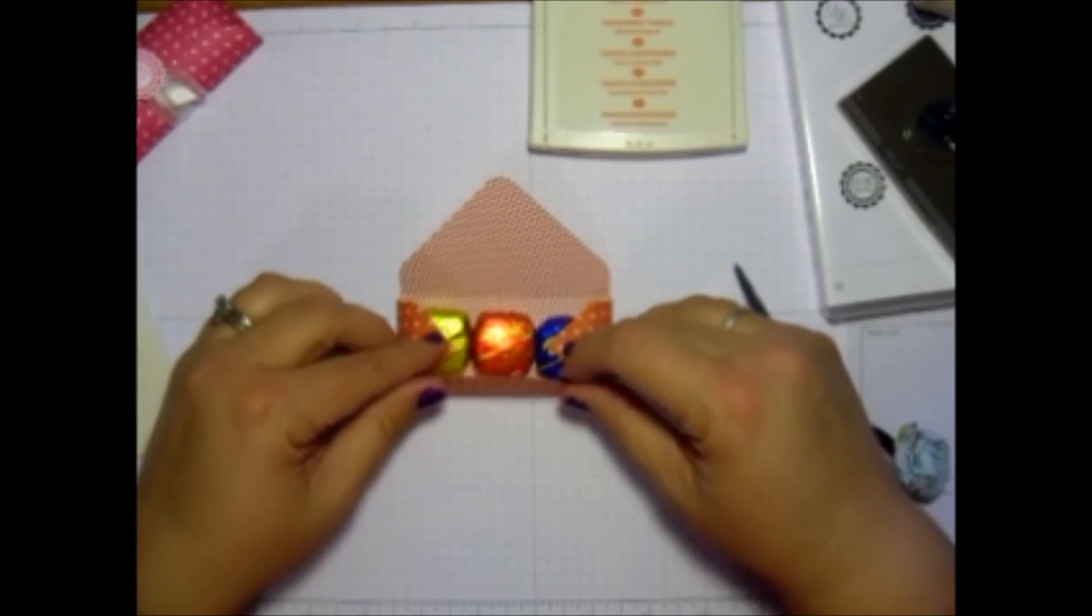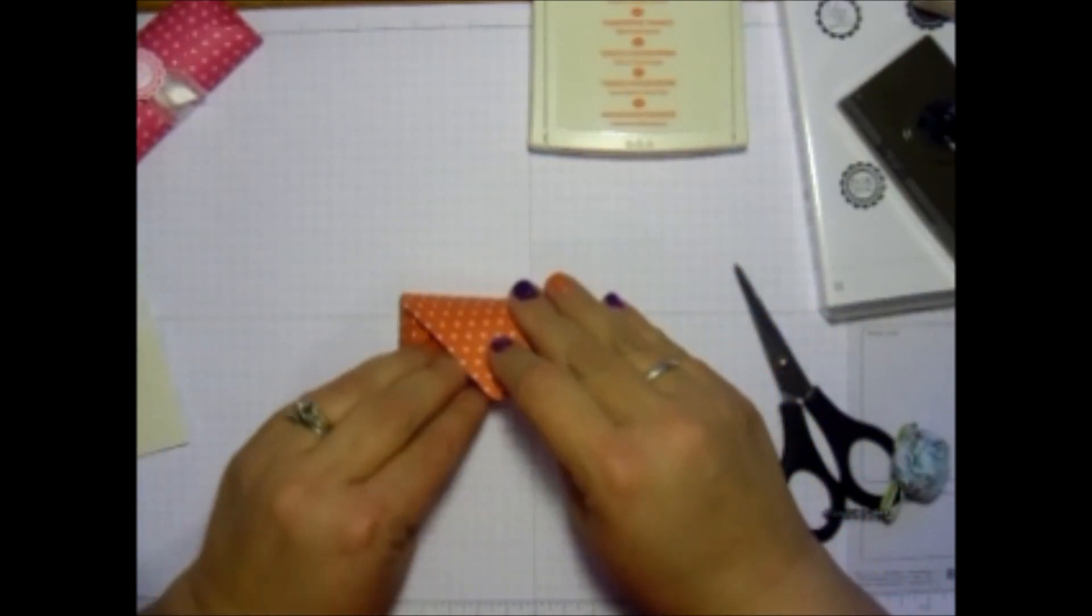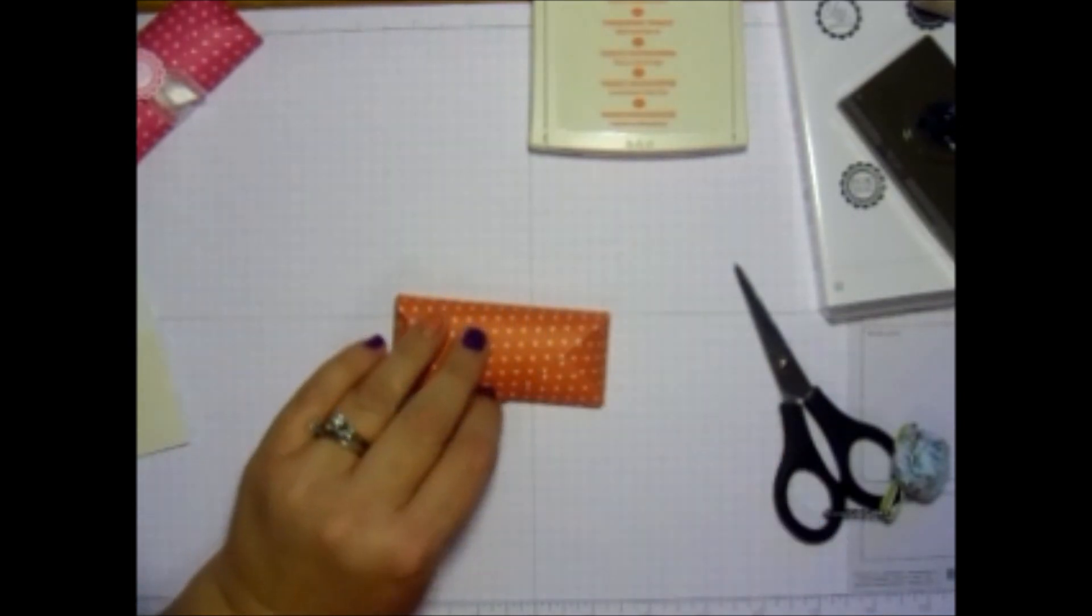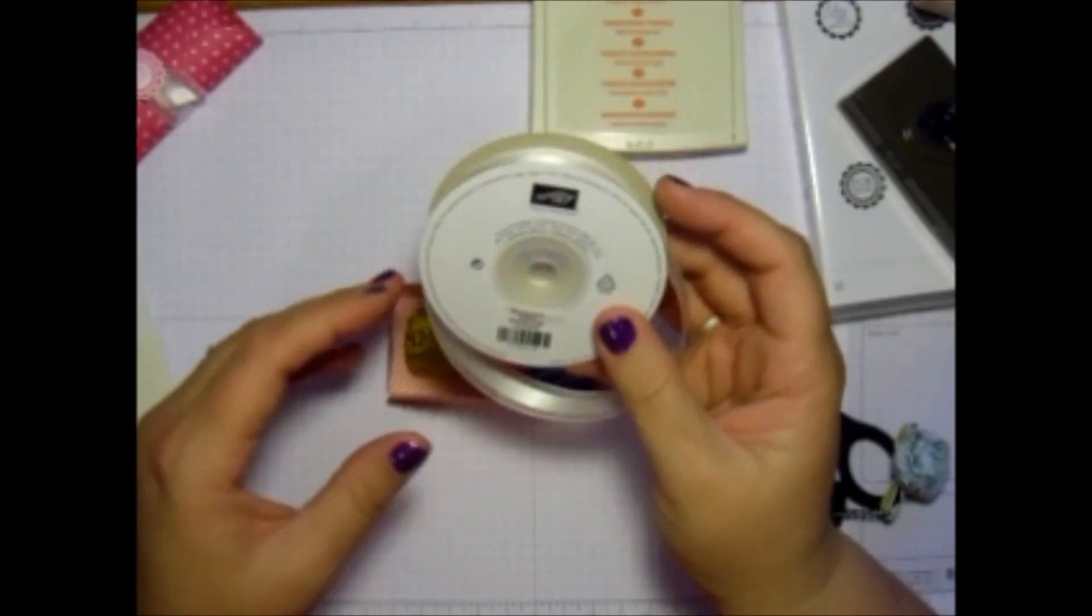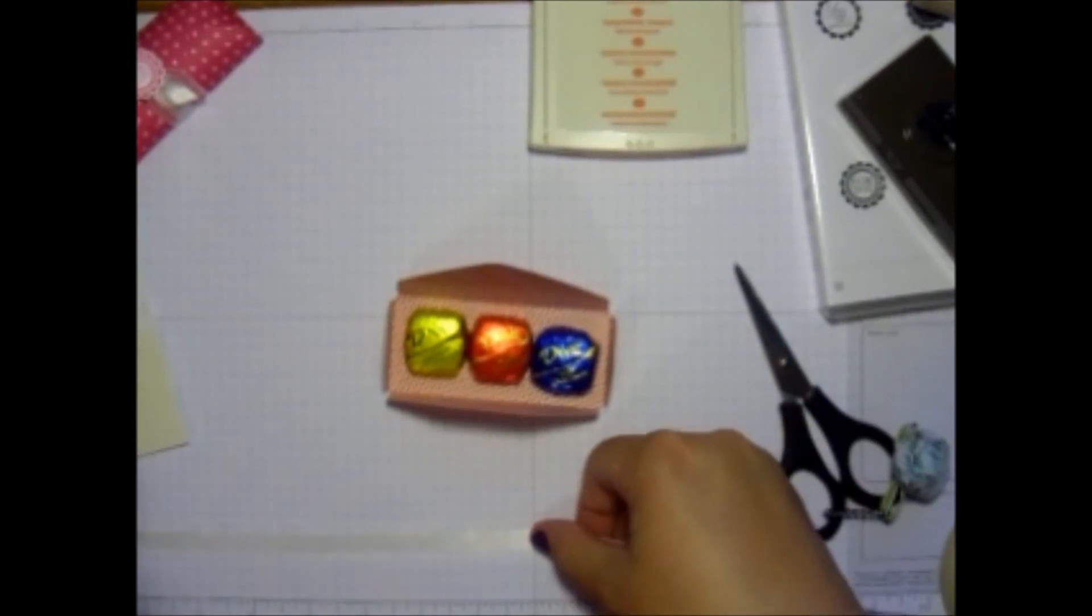And all you do is you fold this side. Fold this over. And then you fold this side over. From there you're going to take the ribbon that you decide. And I just use the Whisper White Organzo Ribbon. You cut off about eight inches or so.